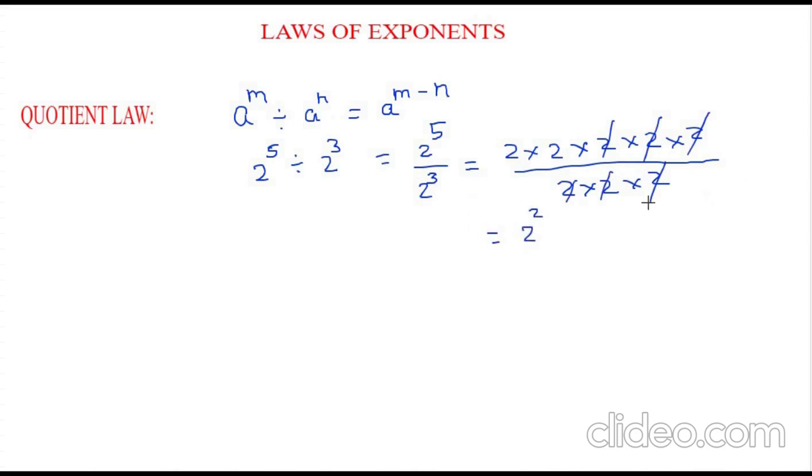So instead of doing so many steps we can directly apply the law by 2 power 5 divided by 2 power 3. This can directly be written as 2 to the power of 5 minus 3 which is 2 square.